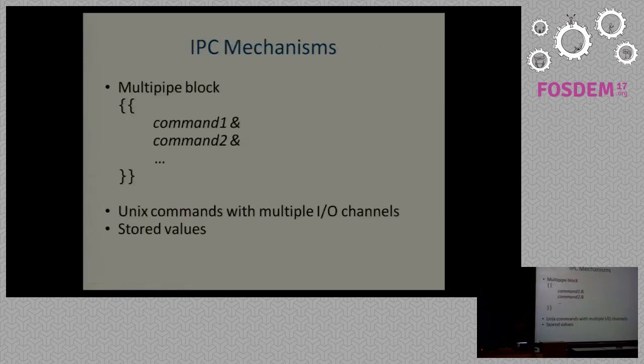So the mechanisms you have in DAGSH are, first of all, multipipe blocks. You can also have Unix commands with multiple input or output channels, such as cat to gather the results, or T to fan out the result, or paste to gather the results, and also stored values as symbolic links through the graph.